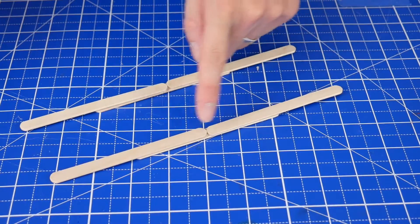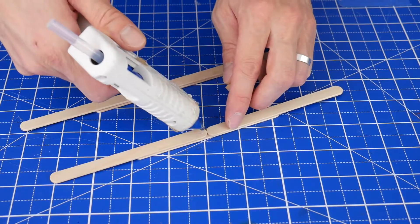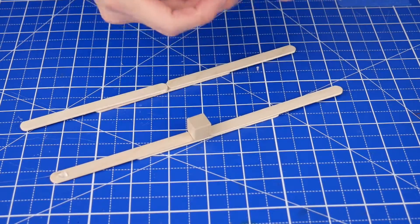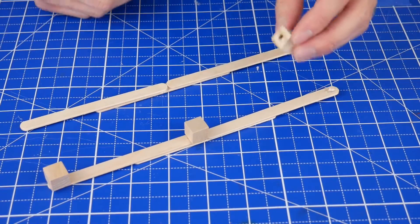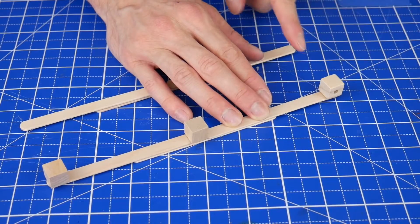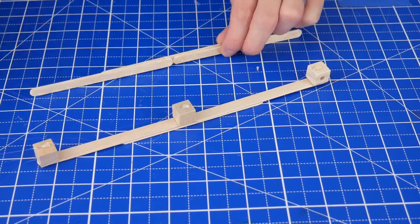Then on one of the beams, on the side that has the two craft sticks lined up with each other, glue on a regular cube in the center and on one of the ends. Then glue a cube with holes onto the other end, making sure that the holes are pointing off to the sides of the beam, like this. Then glue the other beam on top of all three of those cubes.